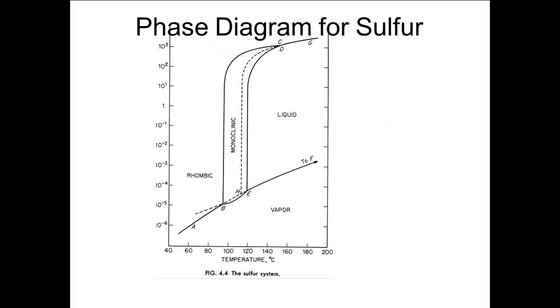The phase diagram for sulfur is included to show one that has two different solid phases. Note that there are three triple points. One between the two solid phases and the gas. One between the two solid phases and the liquid. One between the liquid and the gas.